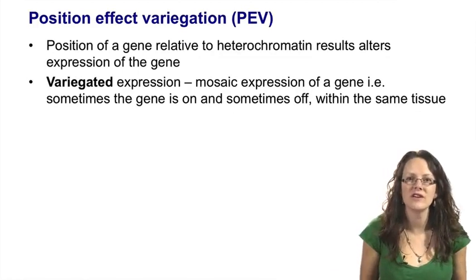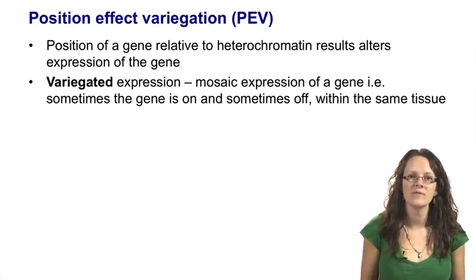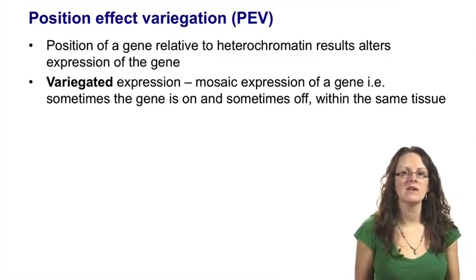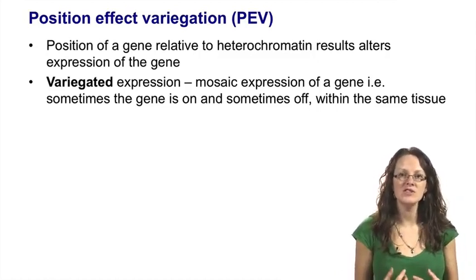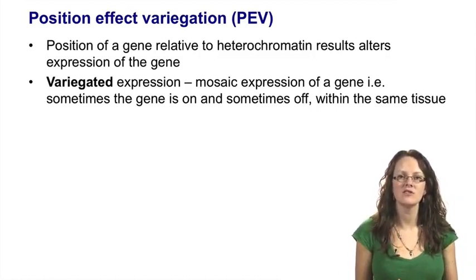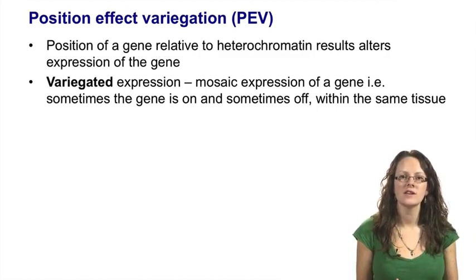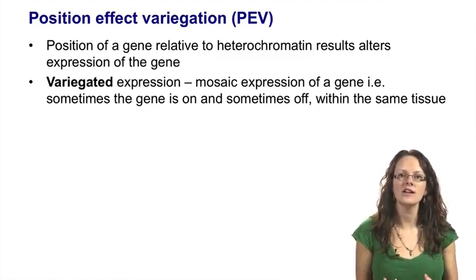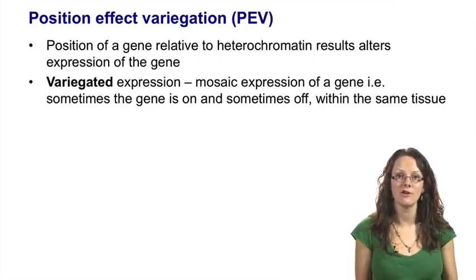So what's position effect variegation? By position effect, we mean that the position of a gene relative to heterochromatin can influence its expression. If a gene is neighbouring heterochromatin, it's more likely to be silenced than if the gene is distal to heterochromatin.